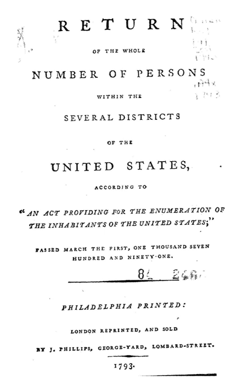No microdata from the 1790 Population Census is available, but aggregate data for small areas and their compatible cartographic boundary files can be downloaded from the National Historical Geographic Information System.